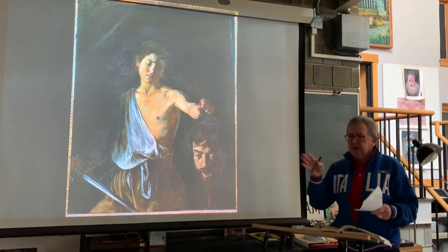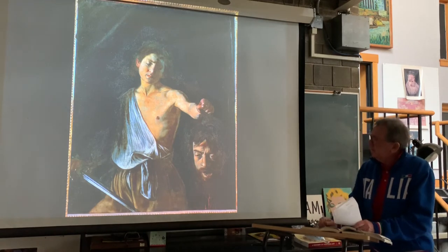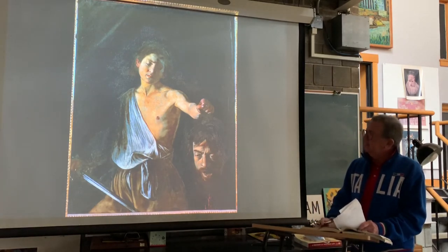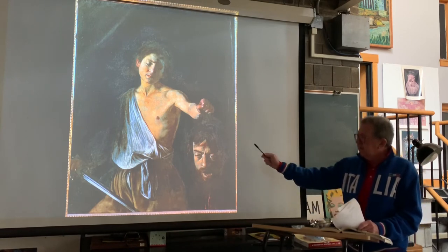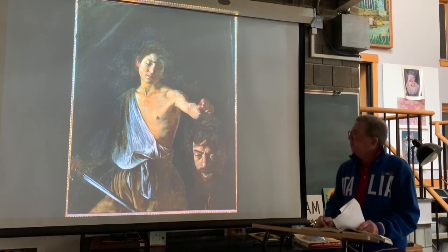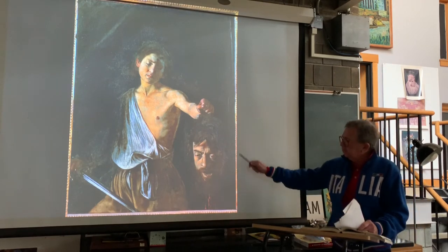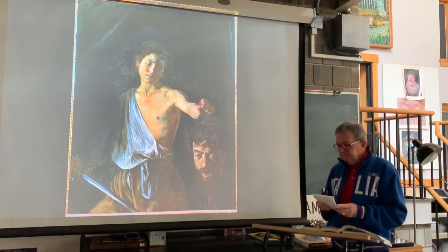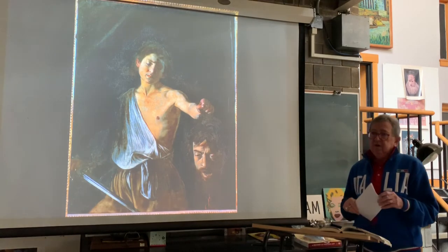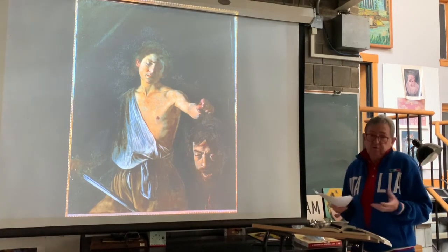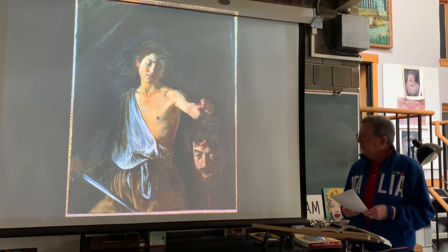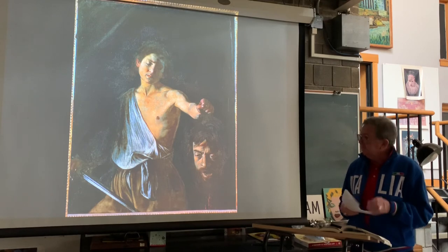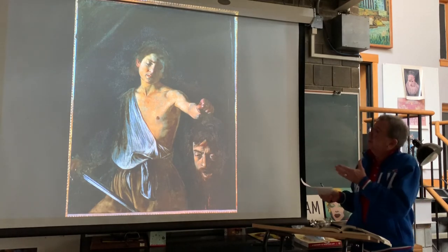This is David and Goliath — a theme we've seen other artists use before. In this case, the young David is holding the head of Goliath, which is actually a self-portrait of Caravaggio. Caravaggio was quite harsh with himself in this painting. He was a very complicated man — he had many run-ins with the law, was jailed as a criminal, and was actually a murderer. He killed a man over a game they were playing.